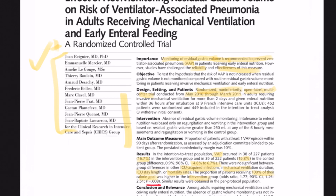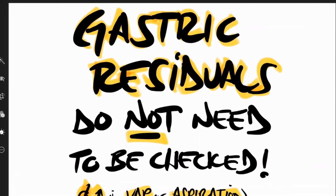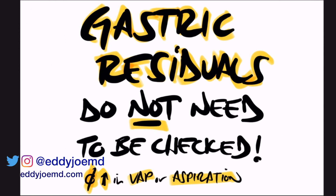The authors concluded that amongst adults requiring mechanical ventilation and receiving early enteral nutrition, the absence of gastric volume monitoring was non-inferior to residual gastric volume monitoring in terms of development of ventilator-associated pneumonia. I hope that is enough information so you can look up the data yourself and feel confident going to your hospital administration to change practice. I don't want nurses to have to do mundane tasks that are not helpful to patients — that's wasteful.